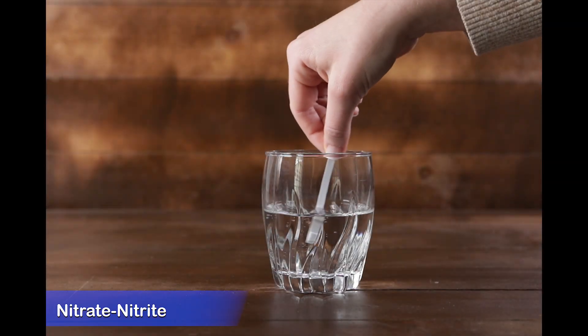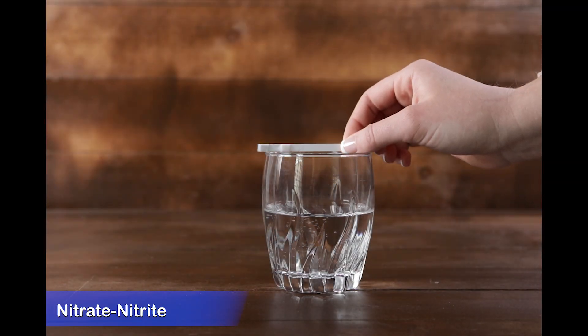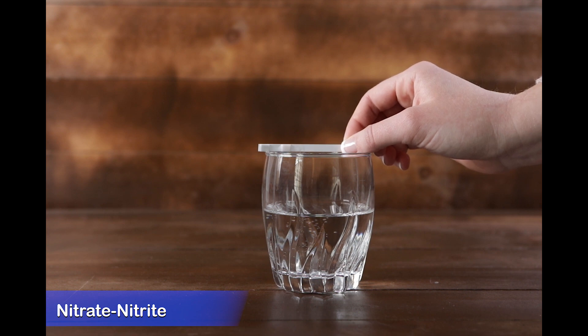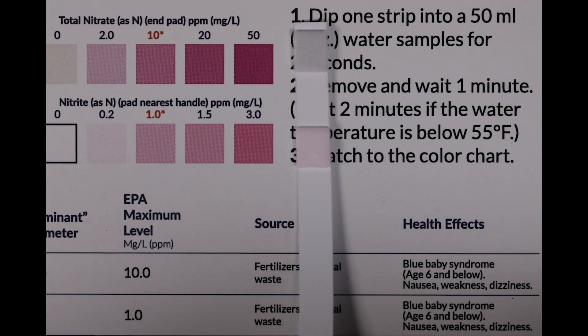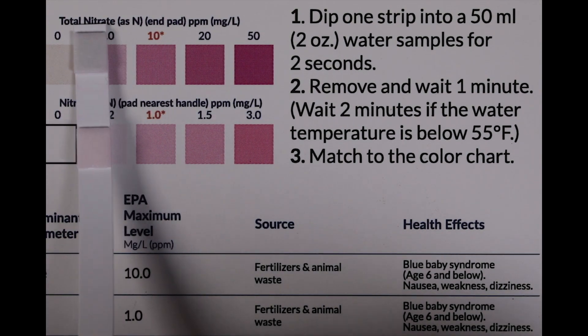Dip the nitrate-nitrite strip into two ounces of water for two seconds. Remove and wait one minute for the color to develop. Compare the strip to the color chart. The closest match indicates the level.